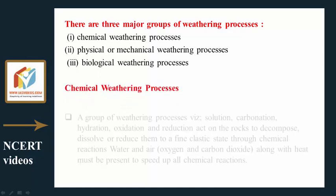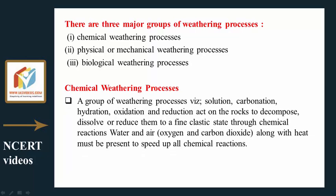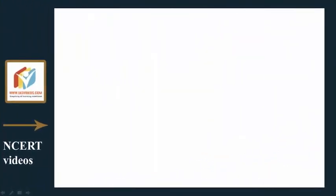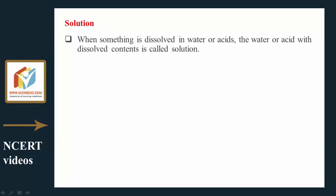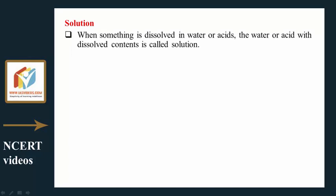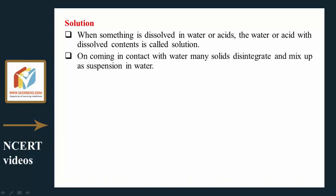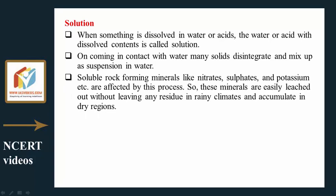Chemical weathering processes — including solution, carbonation, hydration, oxidation, and reduction — act on rocks to decompose, dissolve, or reduce them through chemical reactions. Water, air, oxygen, and carbon dioxide along with heat must be present to speed up all chemical reactions. Water or acid with dissolved contents is called solution. On coming in contact with water, many solids disintegrate and mix as suspension. Soluble rock-forming minerals like nitrates, sulfates, and potassium are easily leached out in rainy climates and accumulate in dry regions.